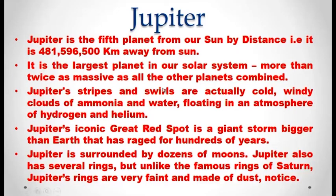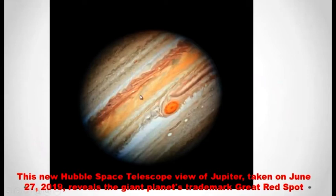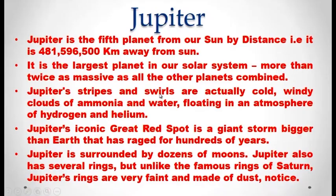Jupiter is the largest planet in our solar system. The mass of Jupiter is more than twice as massive as all other planets combined. The stripes and swells you find in Jupiter are actually cold, windy clouds of ammonia and water floating in an atmosphere of hydrogen and helium. Jupiter's iconic red spot is a giant storm bigger than Earth that has raged for hundreds of years. Jupiter is surrounded by dozens of moons. Jupiter also has several rings, but these rings are not as famous as the rings of Saturn.